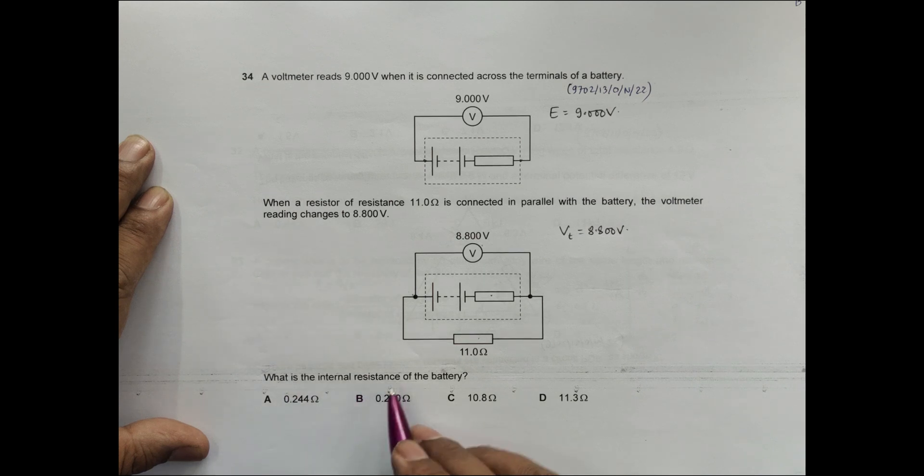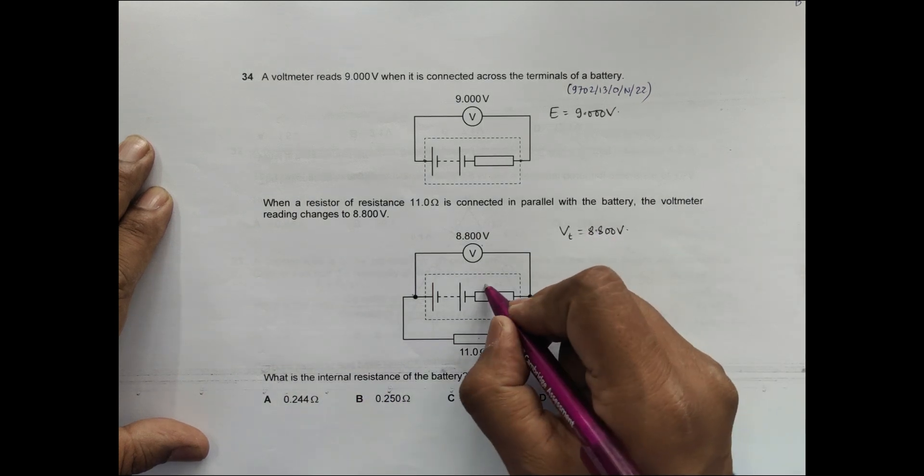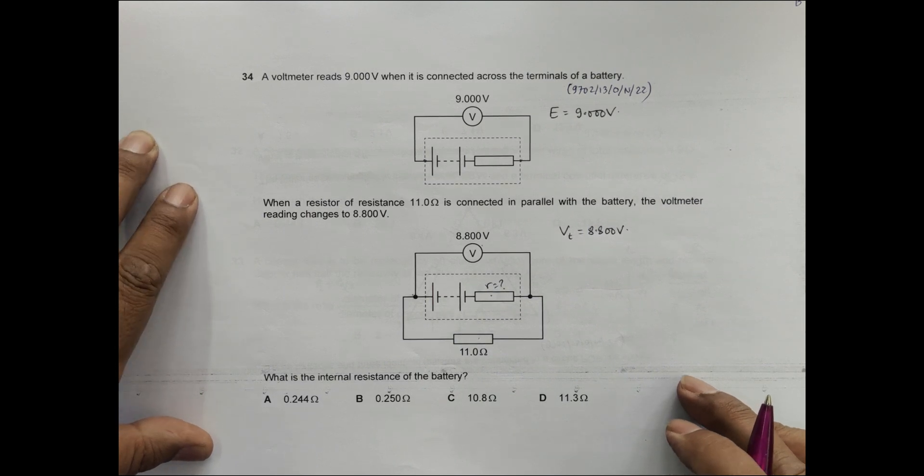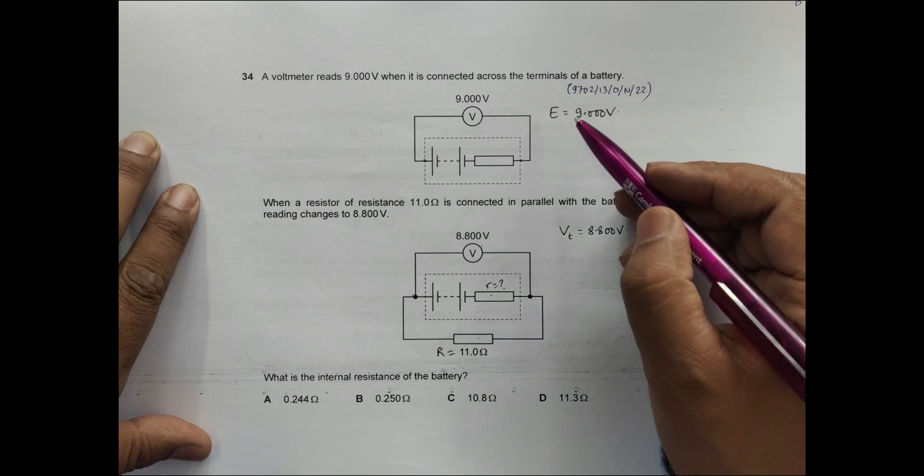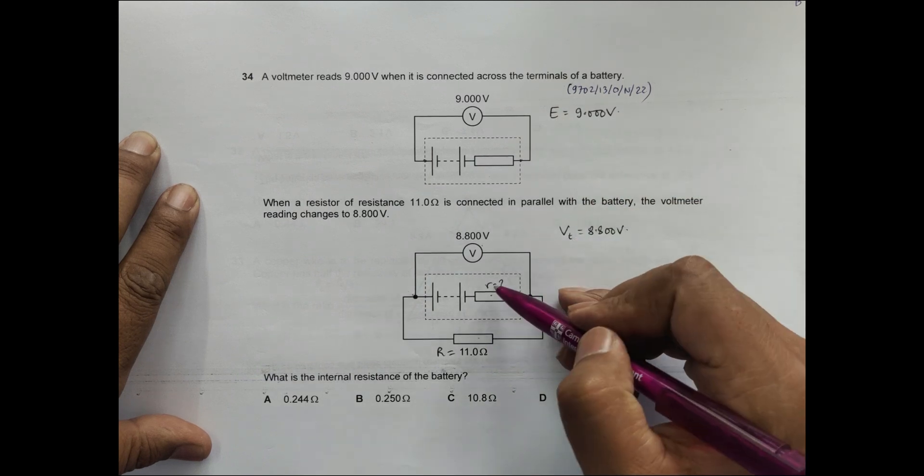So we need to find the internal resistance, this r. The given conditions are R is given, E is given, V_T is given when you find this small r.